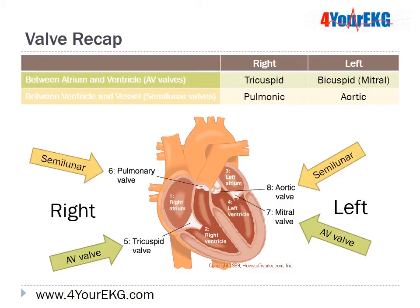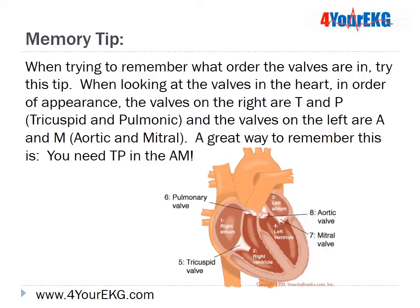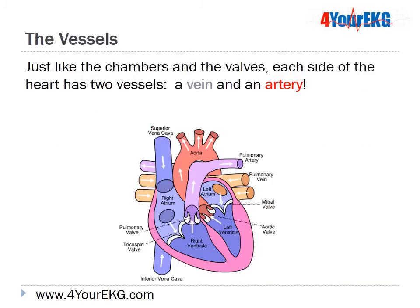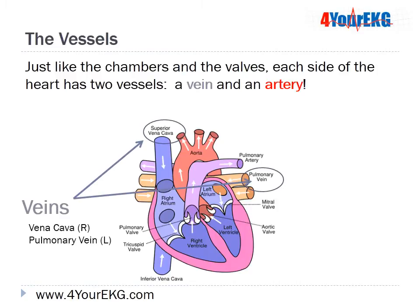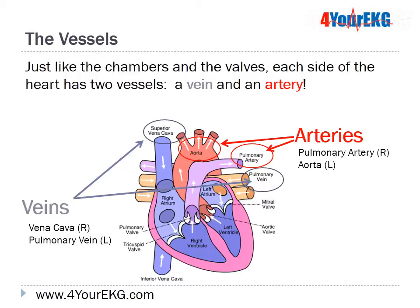Each side of the heart has both an AV and a semilunar valve. A memory tip: the valves on the right in order are T and P for tricuspid and pulmonic, and on the left are M and A for mitral and aortic — remember 'you need TP in the AM.' Just like the chambers and valves, each side of the heart has two vessels: a vein and an artery. The vein on the right is the vena cava; on the left, it's the pulmonary vein. The artery on the right is the pulmonary artery, and on the left, it's the aorta.